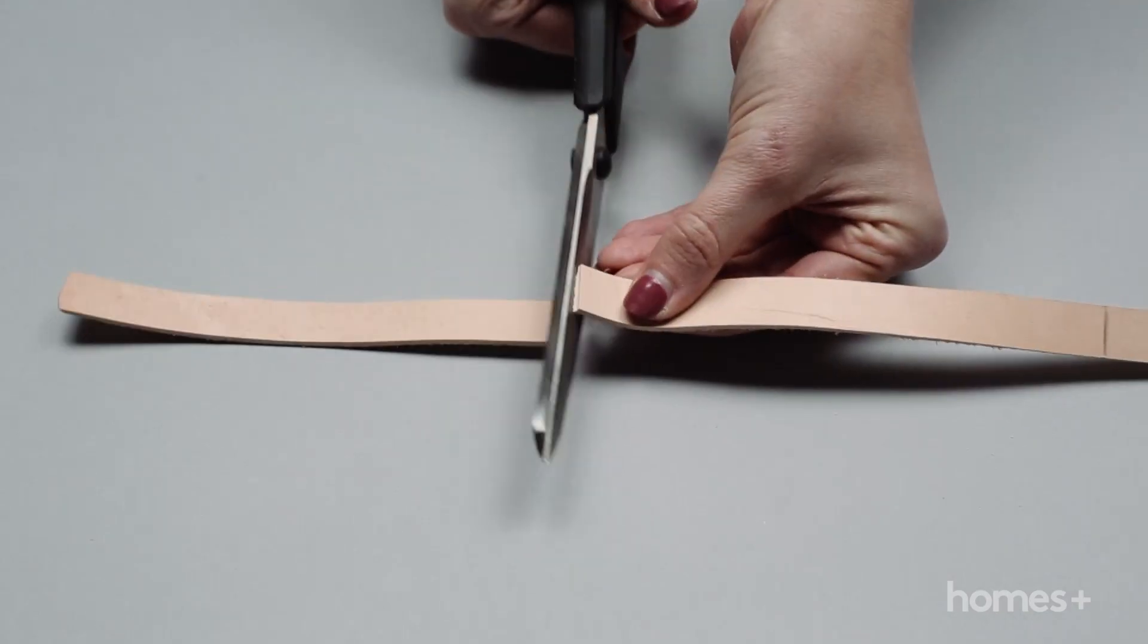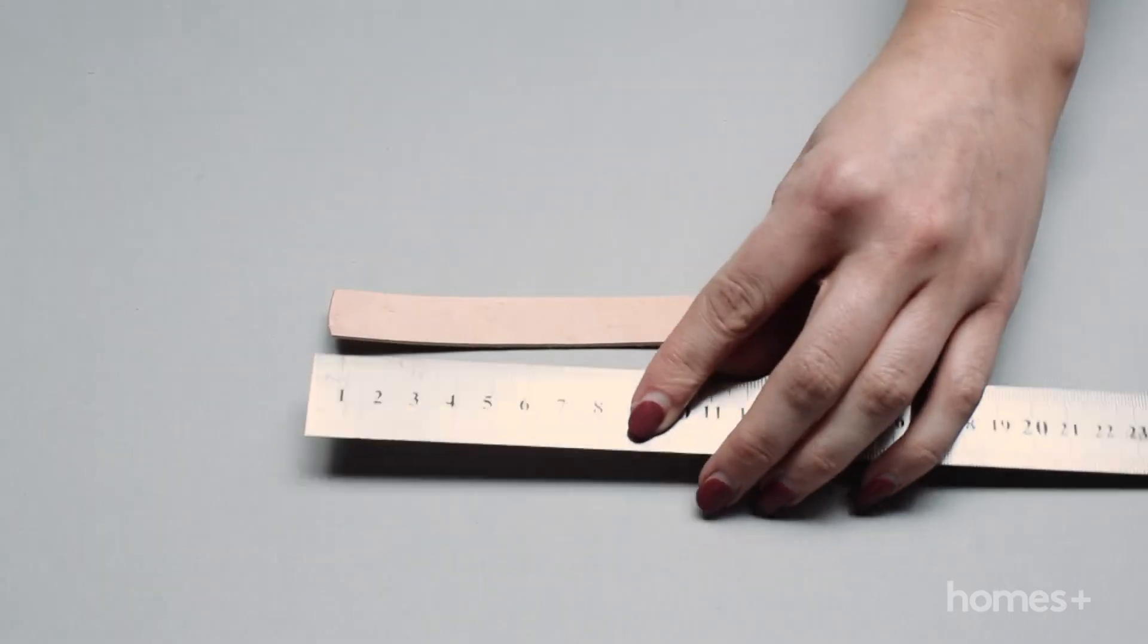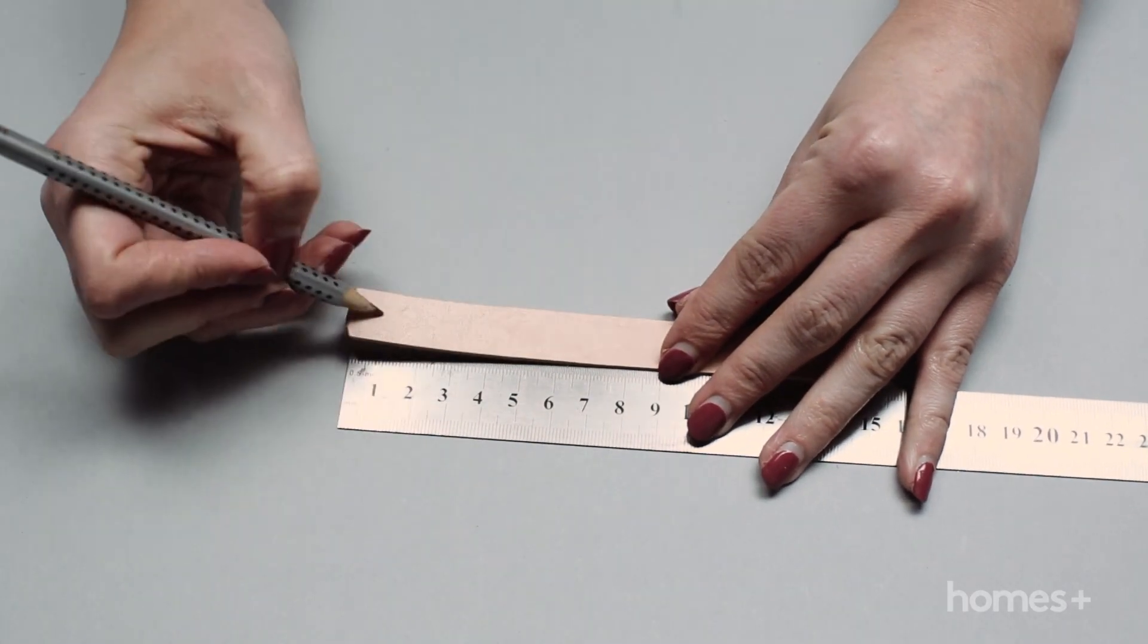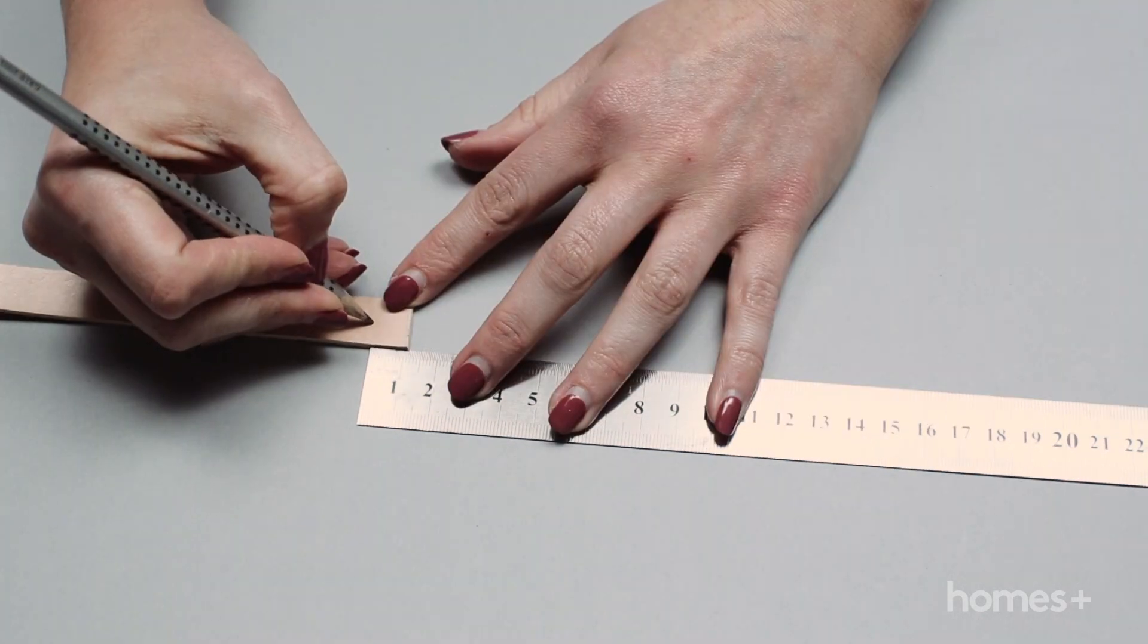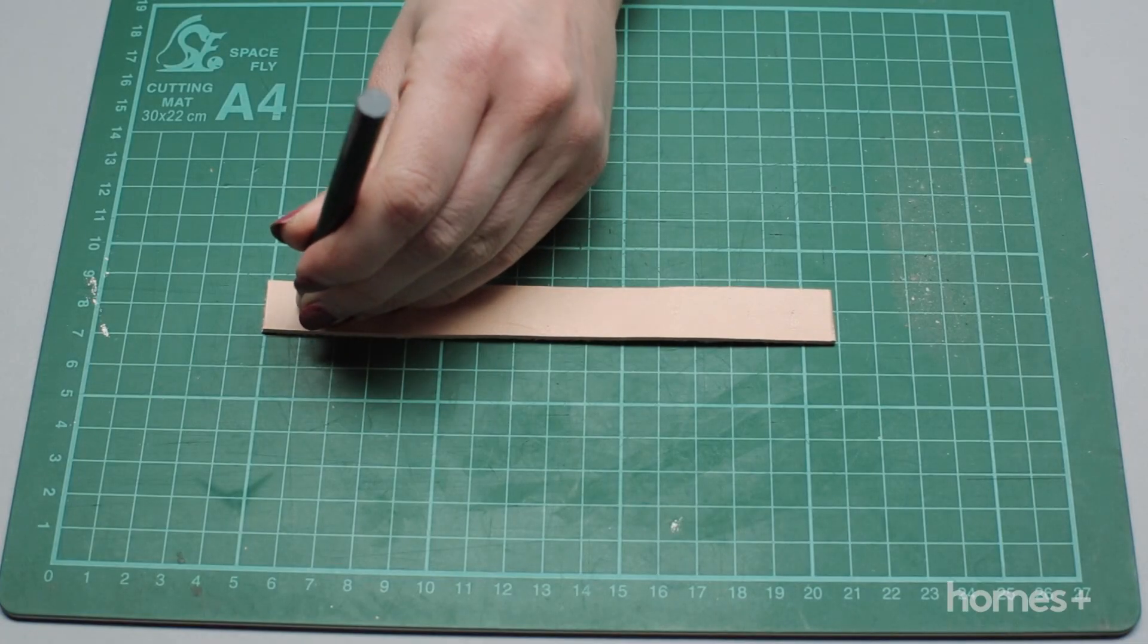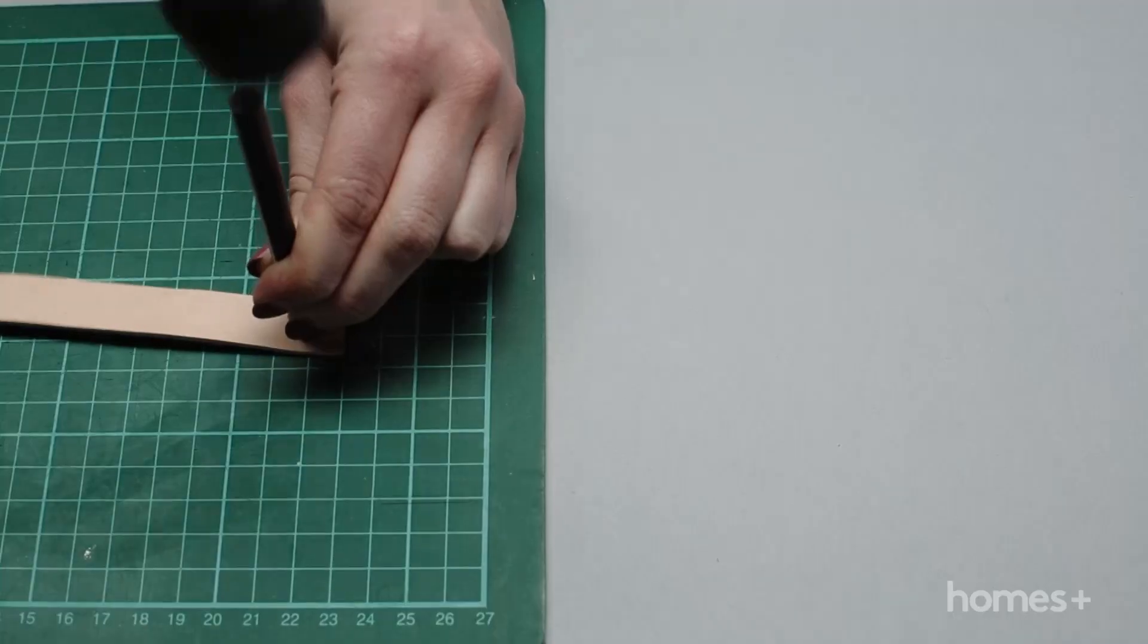Cut at the lines using scissors. Using the ruler and pencil, make a mark one centimeter in from each end of the leather straps. Use a hole punch and mallet to make holes in both ends of all straps.